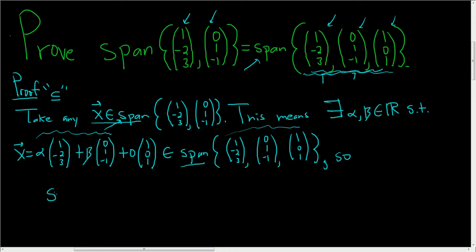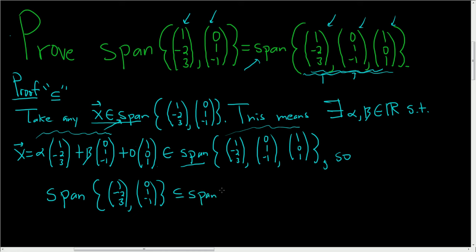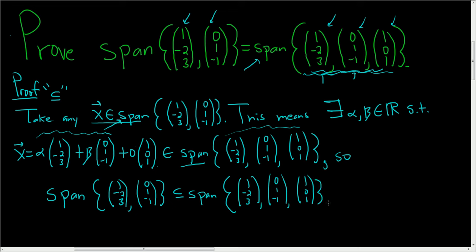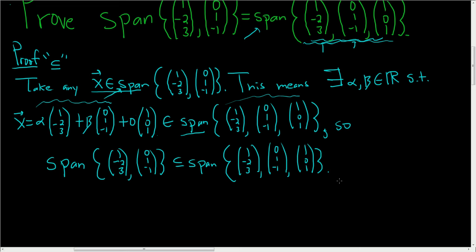So the first inclusion is shown. The span of (1, -2, 3) and (0, 1, -1) is contained in the span of (1, -2, 3), (0, 1, -1), and (1, 0, 1). That was the easy direction. The other direction is going to be a little bit harder, so let's try it.